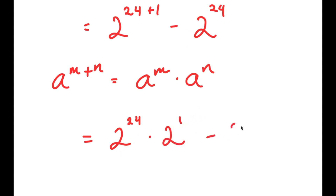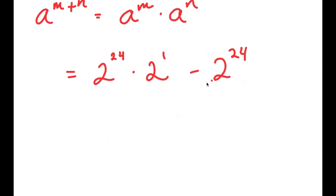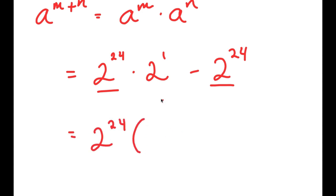I still have this minus 2 to the power of 24. From here, I'm going to factor out 2 to the power of 24, because notice how both of these terms have 2 to the power of 24 in them. So I get 2 to the power of 24 times: 2 to the power of 1 — since 2 to the power of 24 divided by 2 to the power of 24 is just 2 to the power of 1 — and negative 2 to the power of 24 divided by 2 to the power of 24 is just negative 1. So I get 2 to the power of 24 times 2 to the power of 1 minus 1.